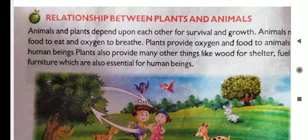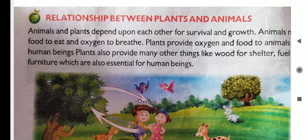Plants also provide many other things like wood for shelter, fuel, and furniture, which are also essential for human beings. Hame plant se kya mil raha hai? Jiasse uski lakdi hamare kaam mein aa sakti hai — shelter banane ke aa sakti hai. Fuel matlab gaon mein kya hota hai? Lakdi jala ke khana banaya jaata hai. Furniture — isse hum apne ghar ke bohot saare furniture banva sakte hain, jaise diwan, sofa, bed, almira.